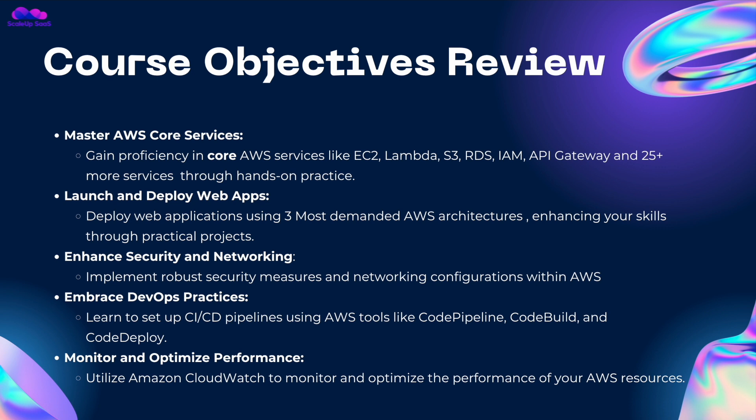What are the course objectives? The first one is to master AWS core services — gain proficiency in core AWS services like EC2, Lambda, S3, RDS, IAM, API Gateway, and 25 plus more services through hands-on practice. The second objective is to launch and deploy your web apps — deploy web applications using the three most in-demand AWS architectures, enhancing your skills through practical projects.